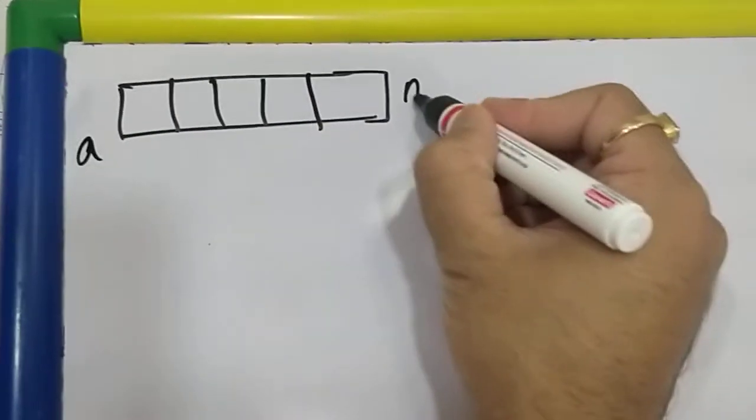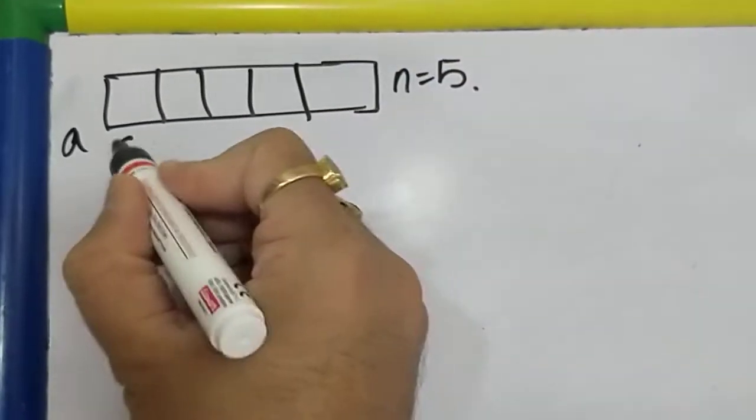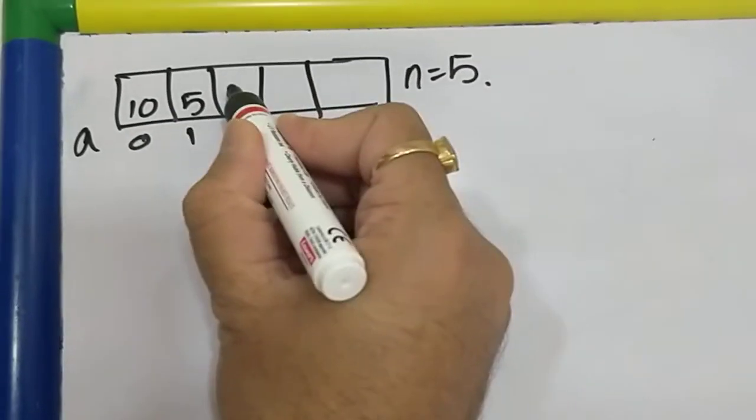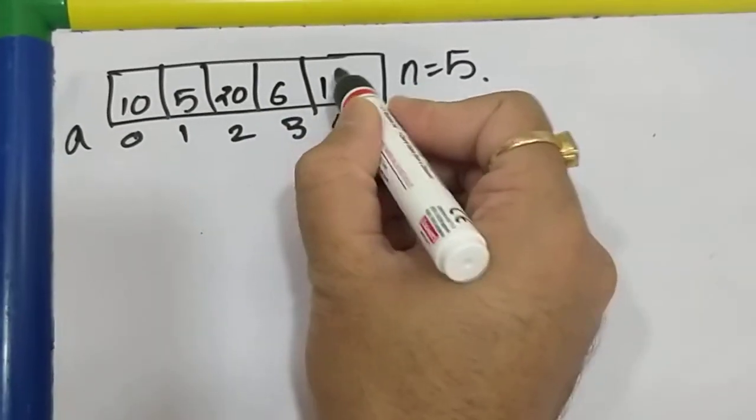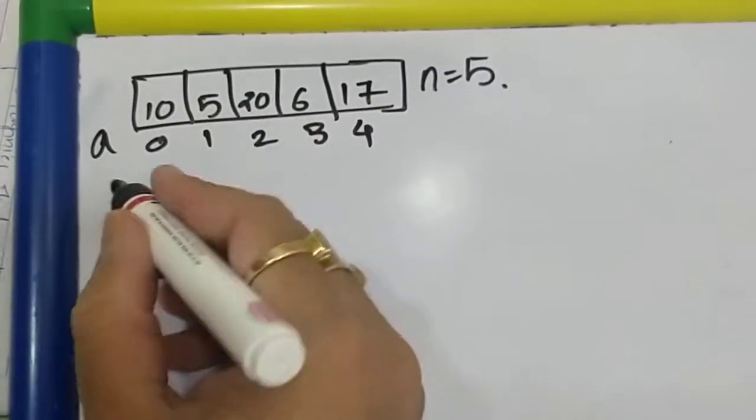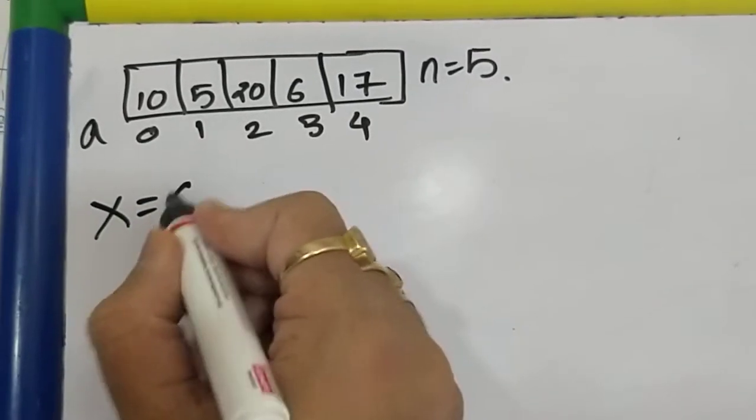Array a of size n equals 5. Let the array elements be 10, 5, 20, 6, 17. The sequence of elements is immaterial. Let's say I want to search for element 6 in my array.